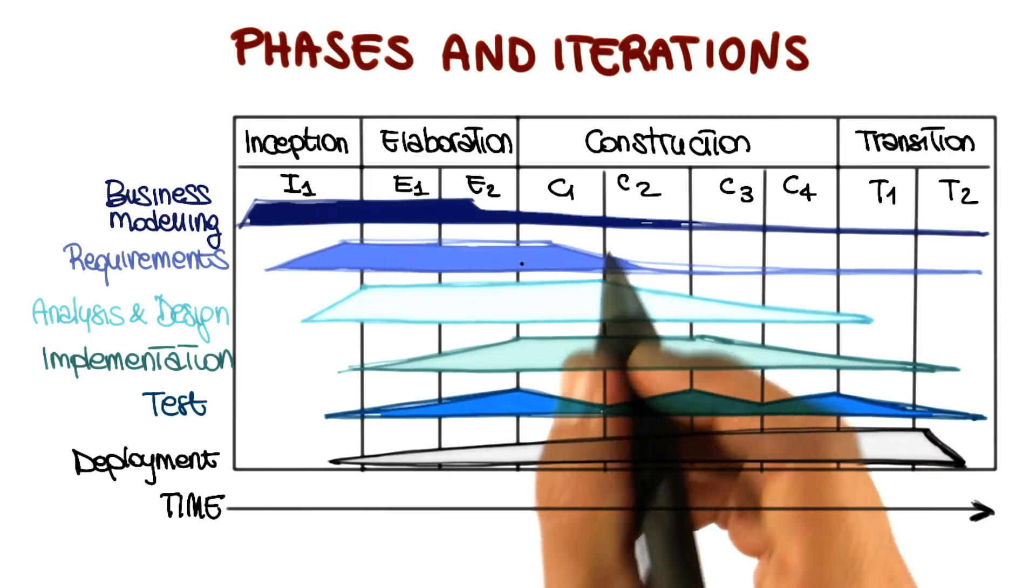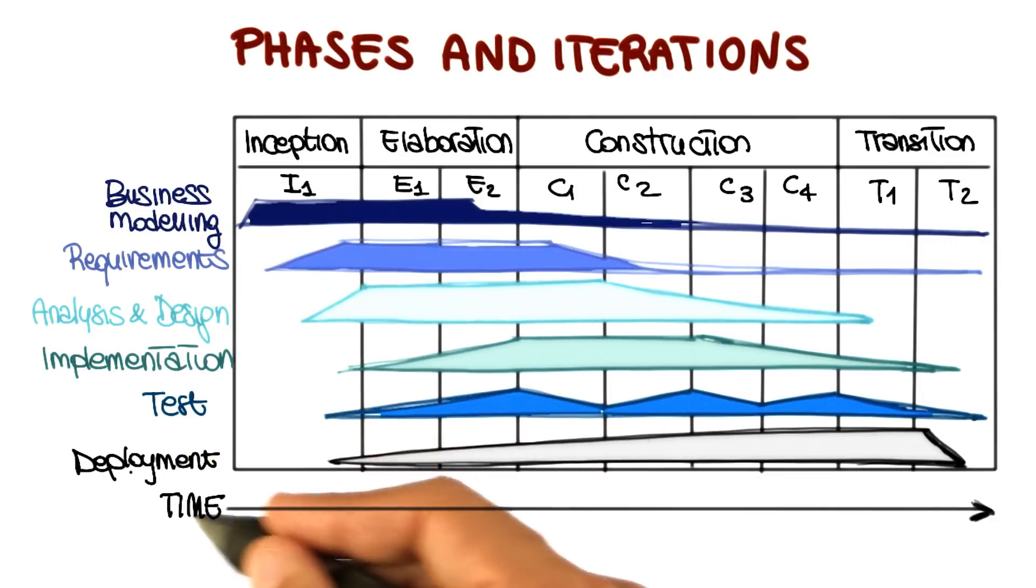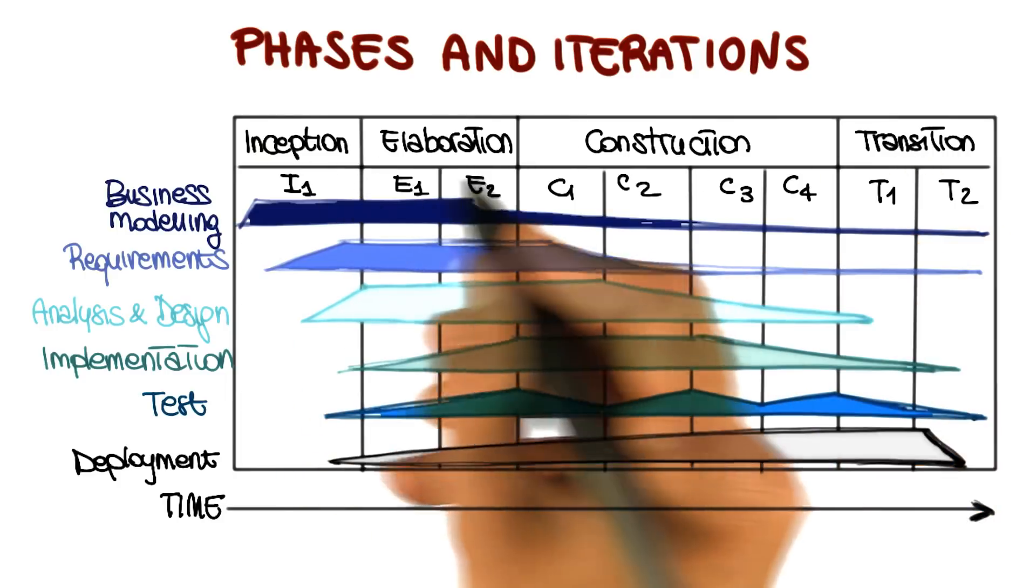So I want to make sure that it's clear by now how and when the traditional software engineering activities, the ones listed here, take place in the context of the RUP phases, the four listed up here.